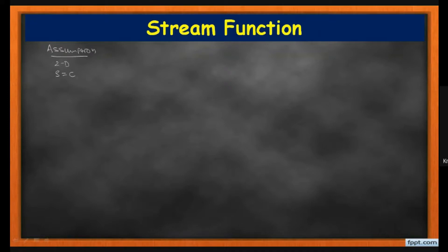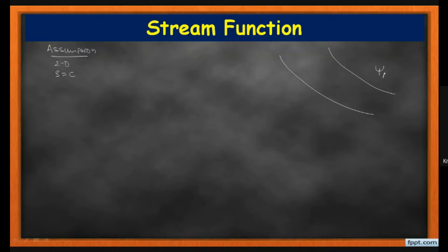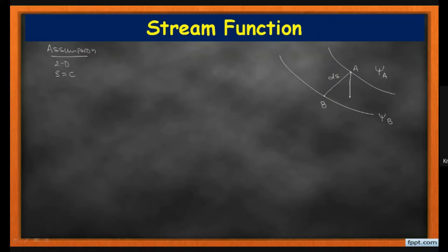We also consider steady flow. For easy understanding, let me take certain streamlines. I am considering two streamlines: one indicated by ψ_a and another by ψ_b. I am considering one point A and another point B. The line joining these two is AB, and the distance is ds. Taking projections parallel to the x-axis and y-axis, this distance is dx and this distance is dy.